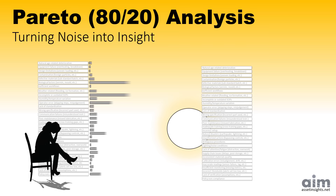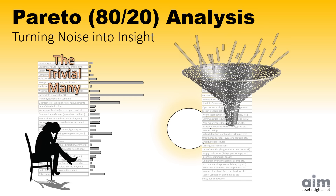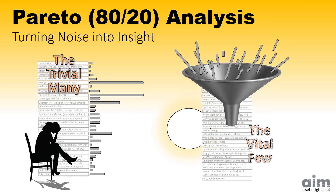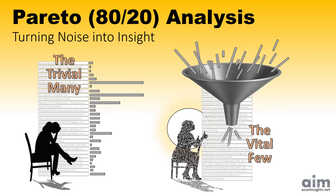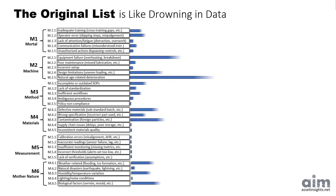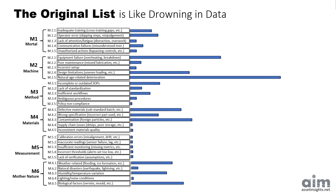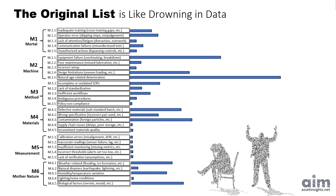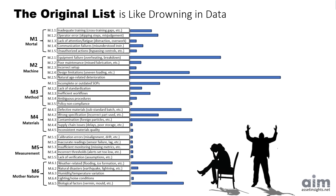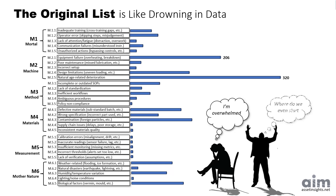Ever feel like you're drowning in data, too many problems, not enough time? What if the key to progress isn't doing more, but focusing on less? Pareto helps us cut through the noise and focus on the few things that really matter. The team starts by listing every possible reason the assets could fail. The result? A wall of bars, every one of them demanding attention. This is the reality for many organizations: so much data and limited time, budget, and people.